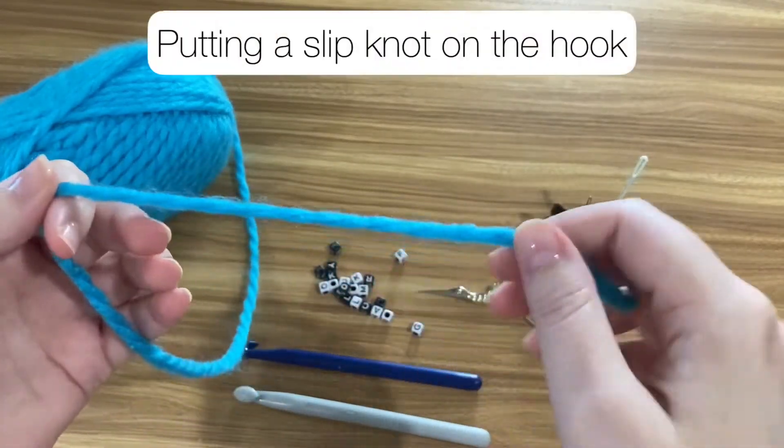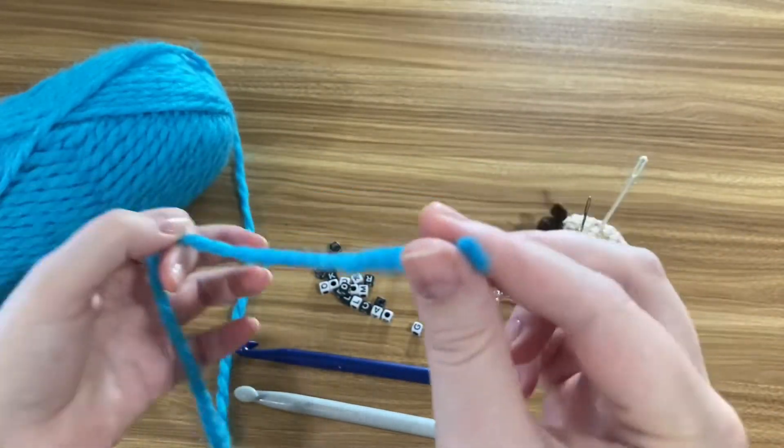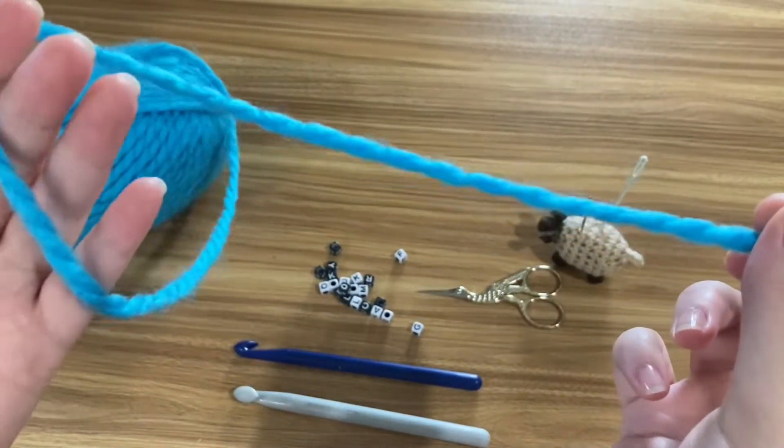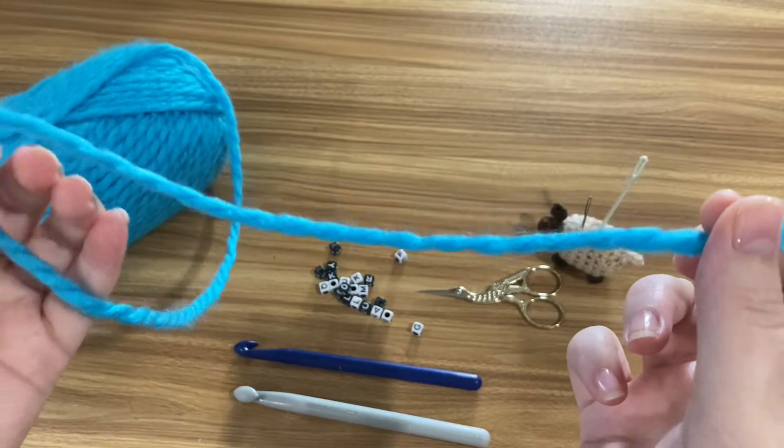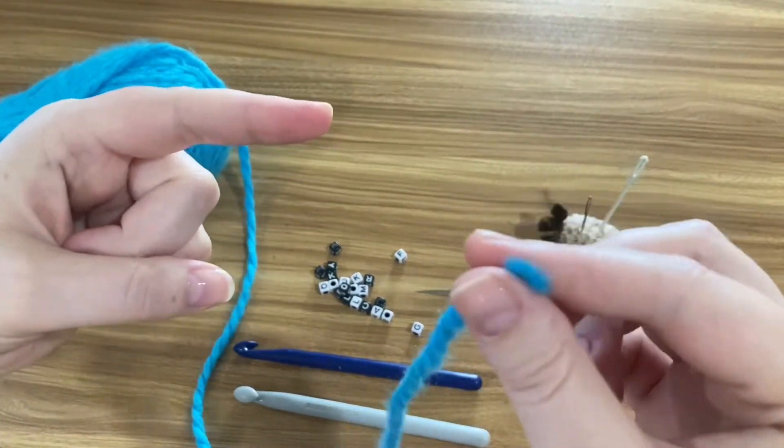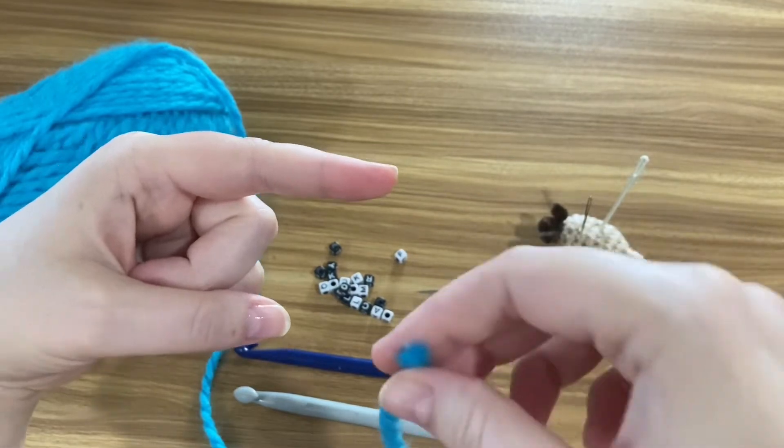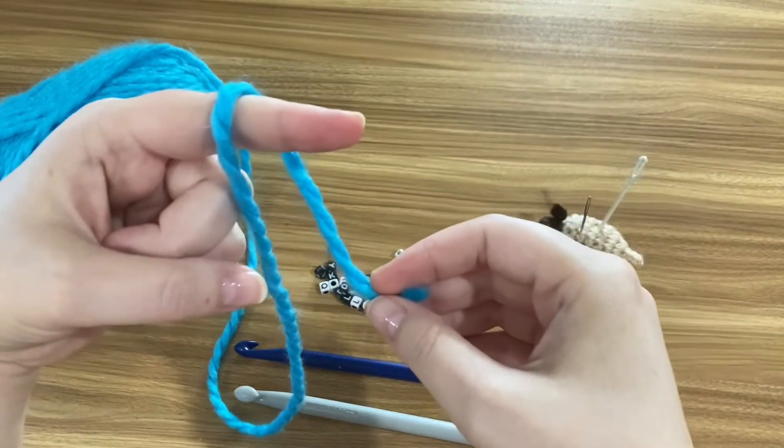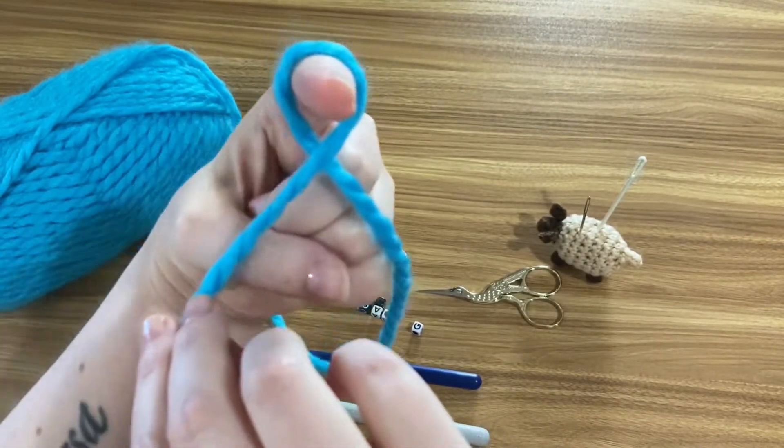Step one is putting a slip knot on the hook. This end of the yarn, the cut end, is the tail. The side that's attached to the ball is called the working end. With your left hand, poke out the pointer finger and hold it sideways like this. Hold the tail in your right hand and take it from the front of your hand to the back, looping it over your pointer finger and then bring it to the front and that creates a little cross.